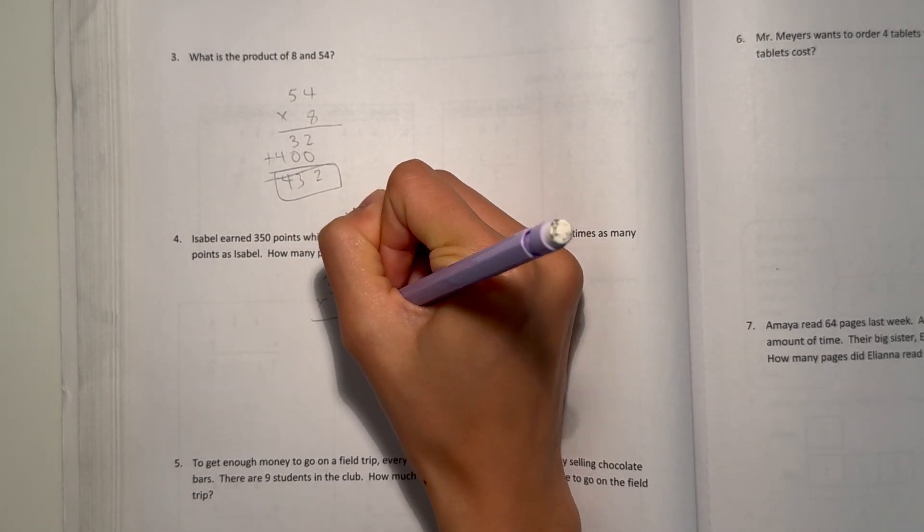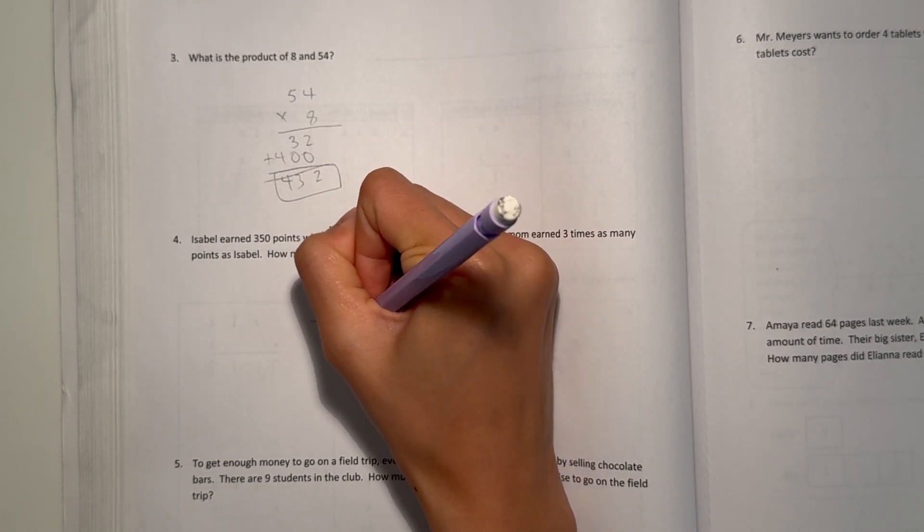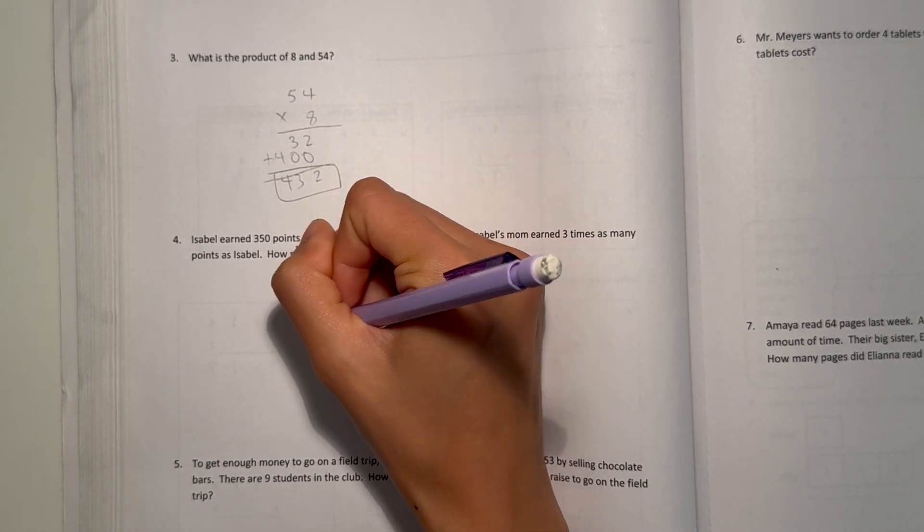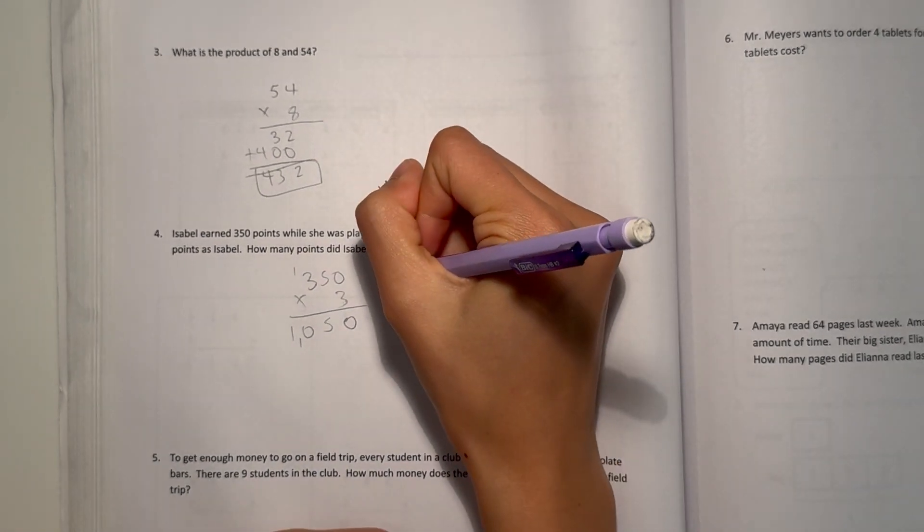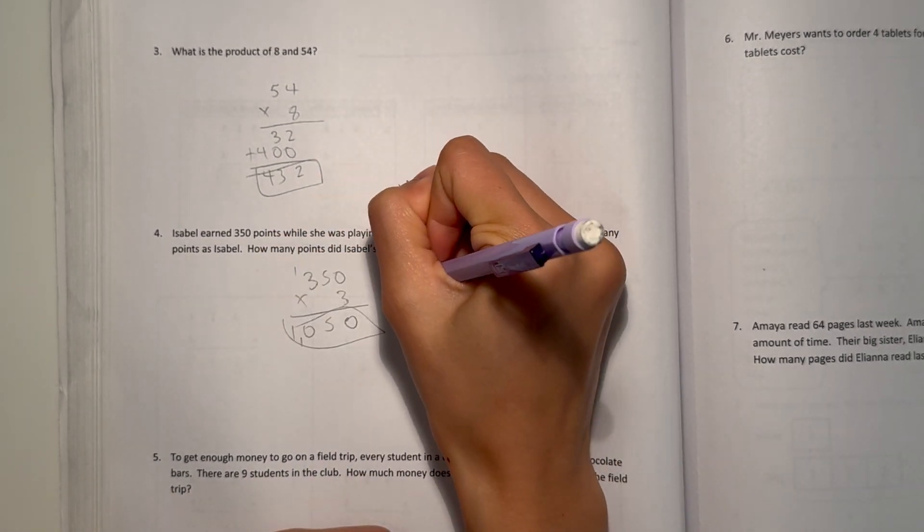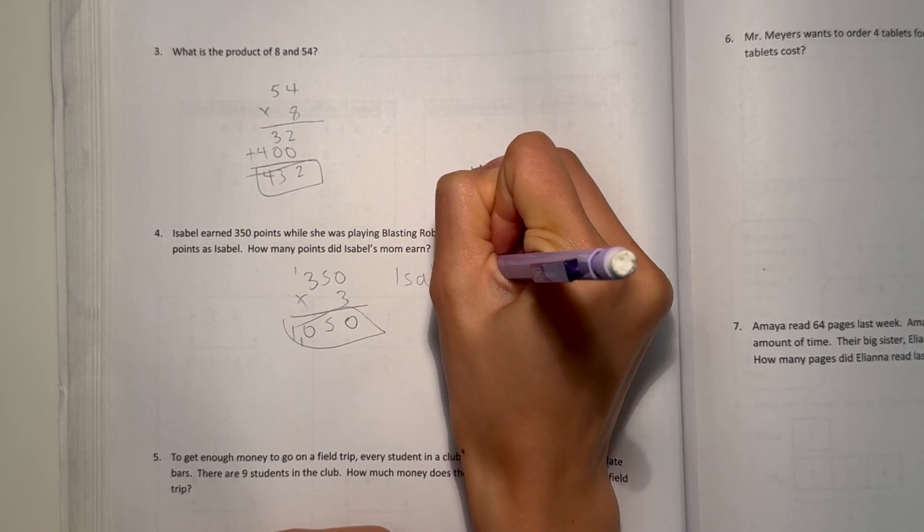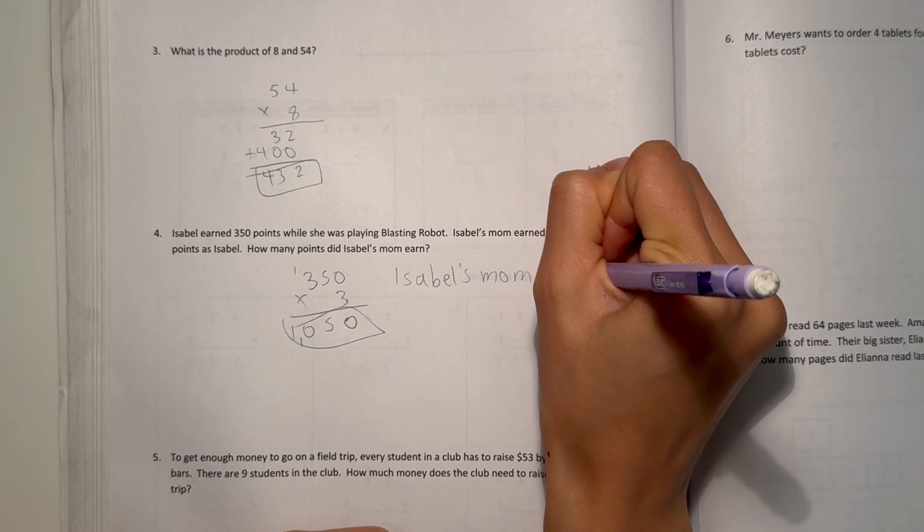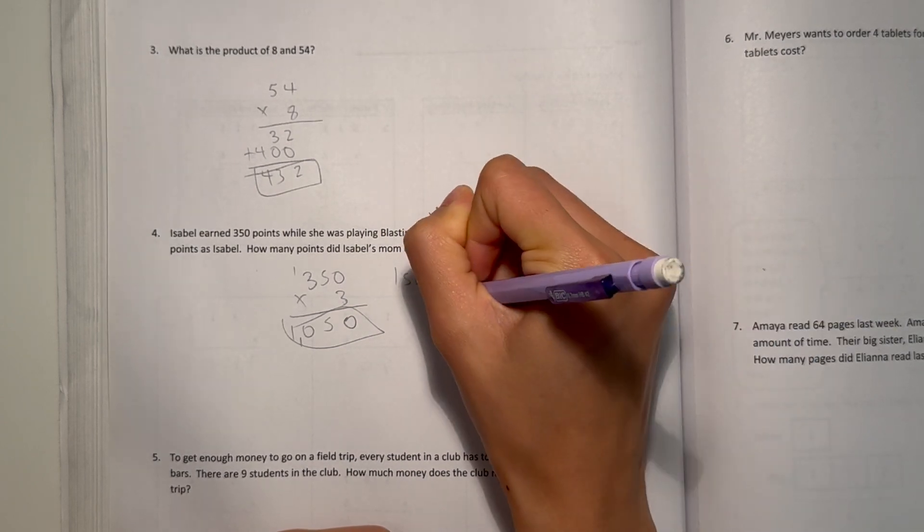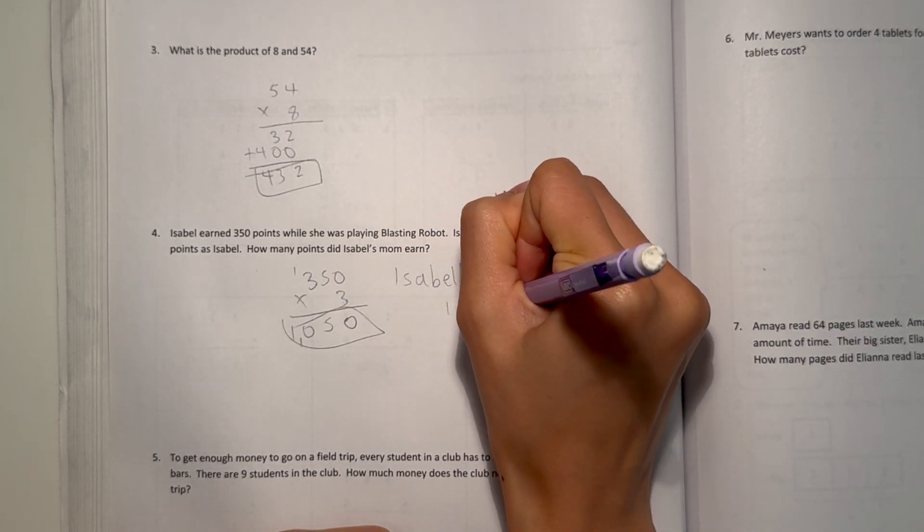0 times 3 is 0, 3 times 5 is 15, 3 times 3 is 9, plus 1 is 10. 1,050. That means, Isabelle's mom earned 1,050 points.